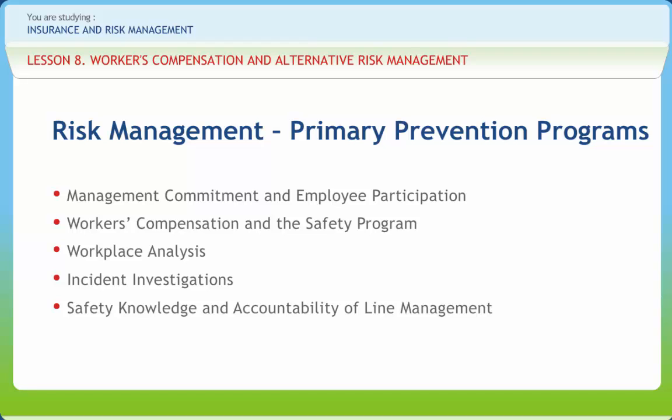Next is Safety Knowledge and Accountability of Line Management. Though safety personnel as risk managers can advise line managers, only the line manager controls the actions of workers. In order to meet the responsibilities for the safety of the workers they supervise, the line manager must be knowledgeable in the science of safety management and regulatory requirements. Next is Employee Training — based on the hazard assessment risk data and requirements of regulatory guidelines, a successful risk management program for controlling workers' compensation cost must include an organized training program. Next is Hiring Decisions — to the extent allowed by regulatory guidelines, certain judgements in decisions related to the risk involved in hiring should be made. Decisions can also be made after a review of available records within the Department of Labor concerning an individual's job history.